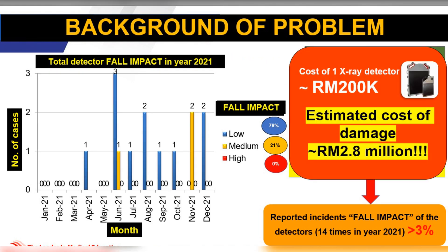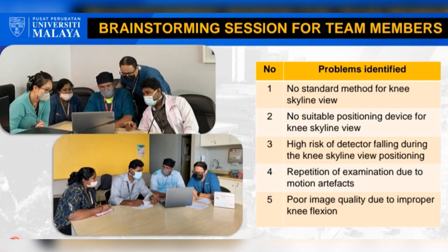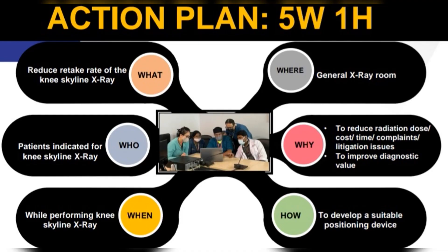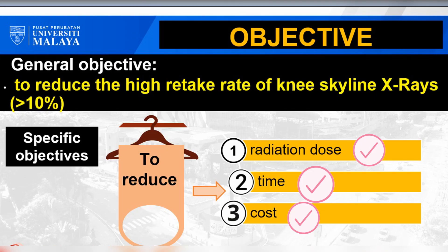Should the detector be damaged due to a fall, the estimated cost of damage was approximately RM2.8 million. From a brainstorming session, we identified 5 main problems. We analyzed our problem based on 5W and 1H and decided to develop a suitable positioning device called Skyliner. Therefore, our objective was to reduce the retake rate of knee skyline X-ray.